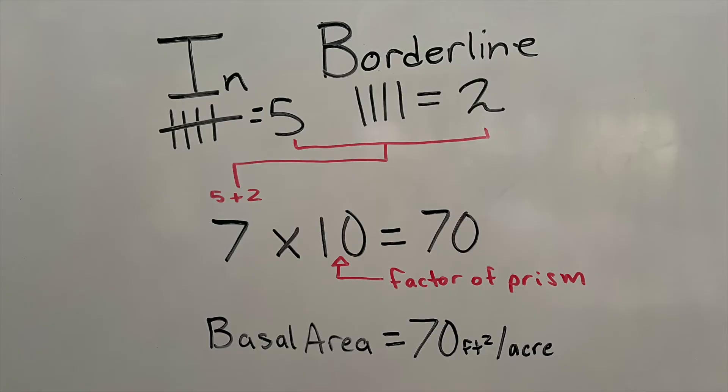First we need to tally up the ins and borderlines from our count in our selected forest plot. In our case, we had 5 ins and 2 borderlines. Please keep in mind that when counting the borderlines in your forest plot, each count is worth 0.5.